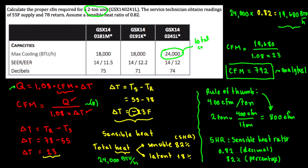The total cooling capacity applies to both heating and cooling, because heat is energy in motion. When we're talking about cooling, we're extracting heat — that's the proper way to understand it.